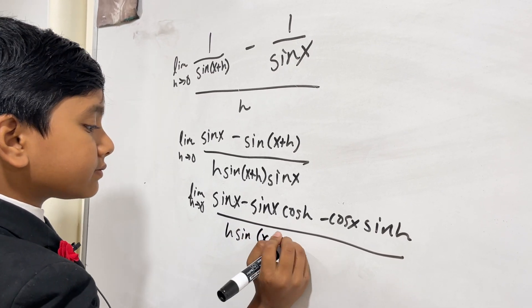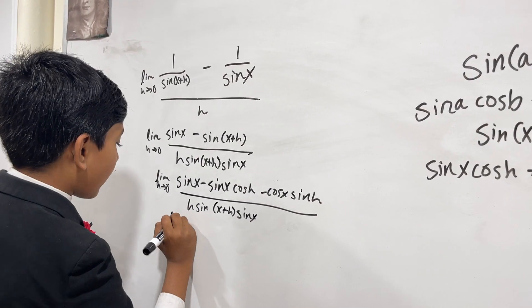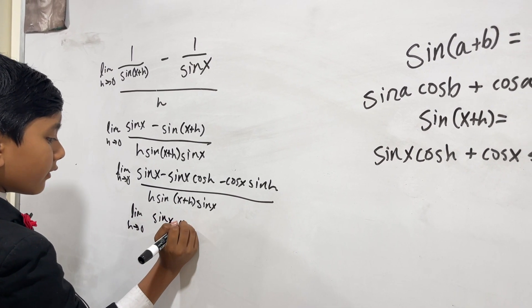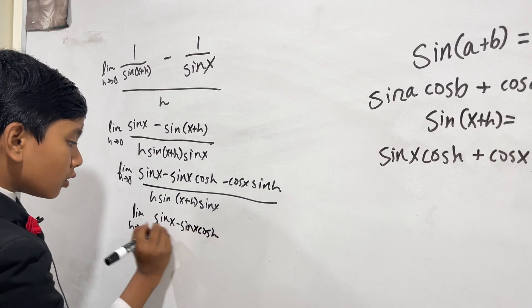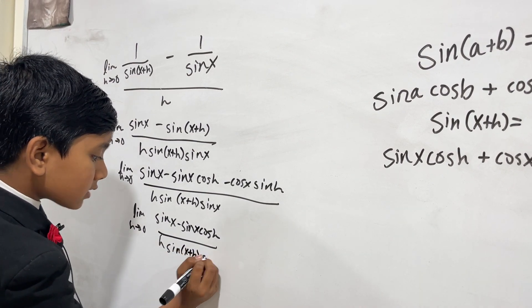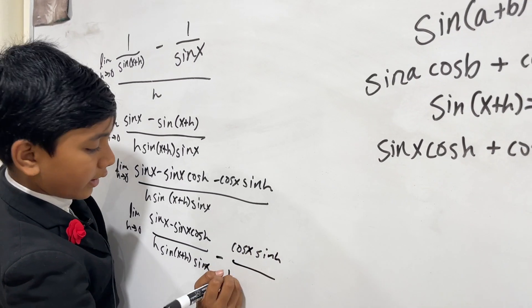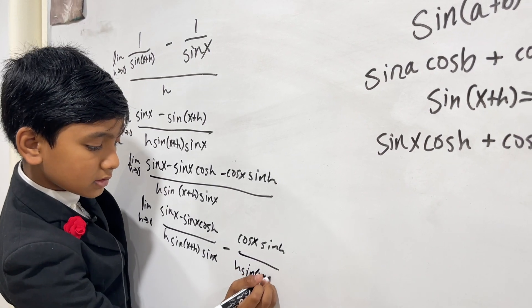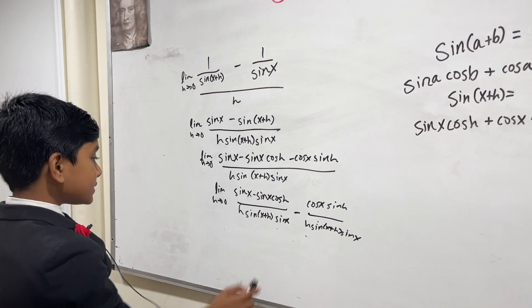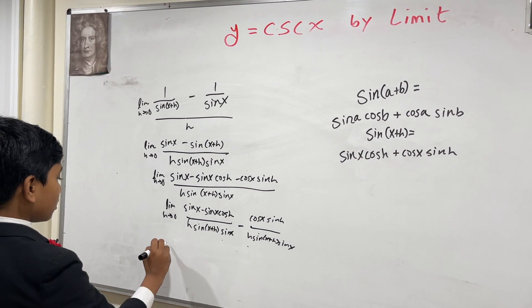So the numerator becomes sine(x)cosine(h) minus cosine(x)sine(h), all over h times sine(x + h) times sine(x). We can then split this fraction and factor sine(x) out of the relevant term in the numerator.